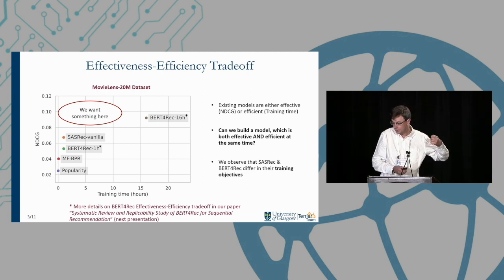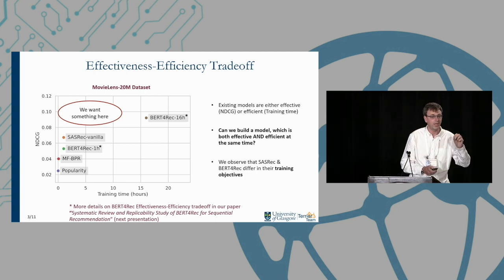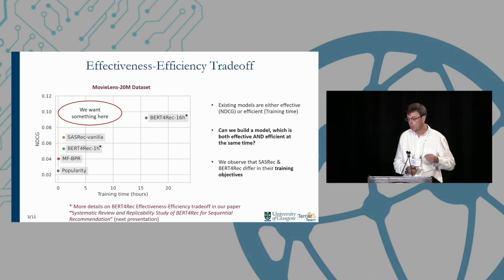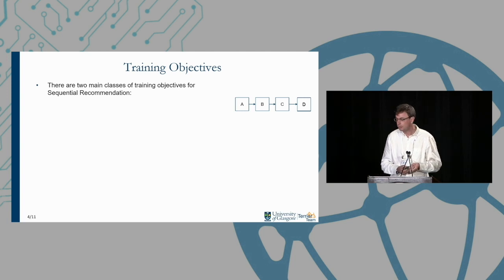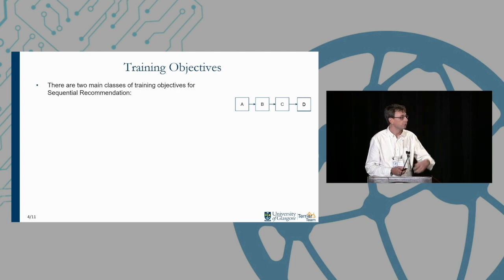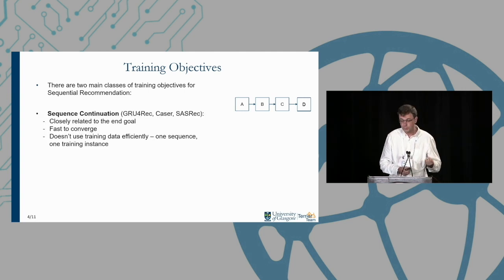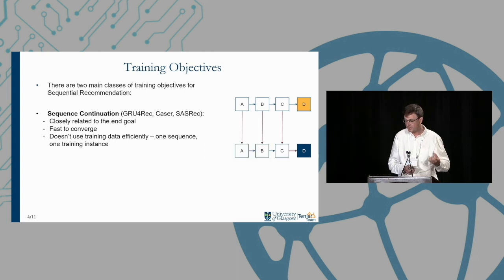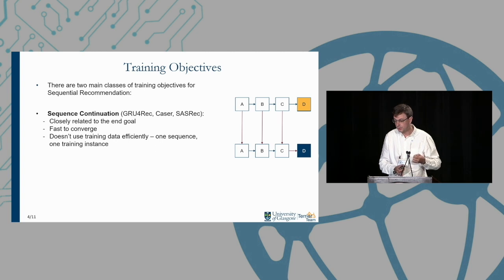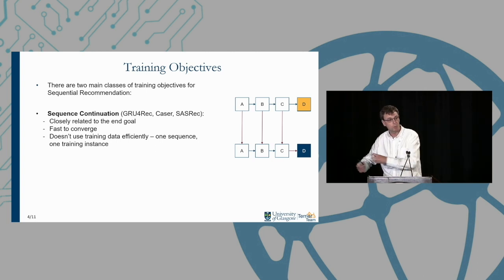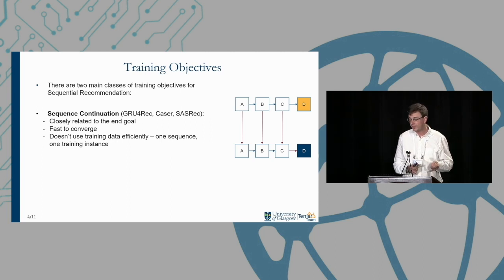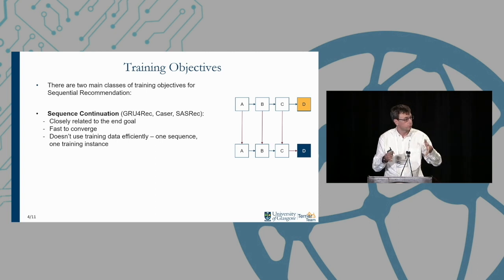Looking at transformer models SASRec and BERT4Rec, we examined their training objectives. There are mainly two classes of training objectives for sequential recommendation. In sequence continuation, given a training sequence A B C D, I take D as the target item — given A, B, and C, the model should predict D. Sequence continuation is closely related to our end goal and results in fast-converging models, but it doesn't use training data efficiently: given one sequence, you only show it once, with a single positive.